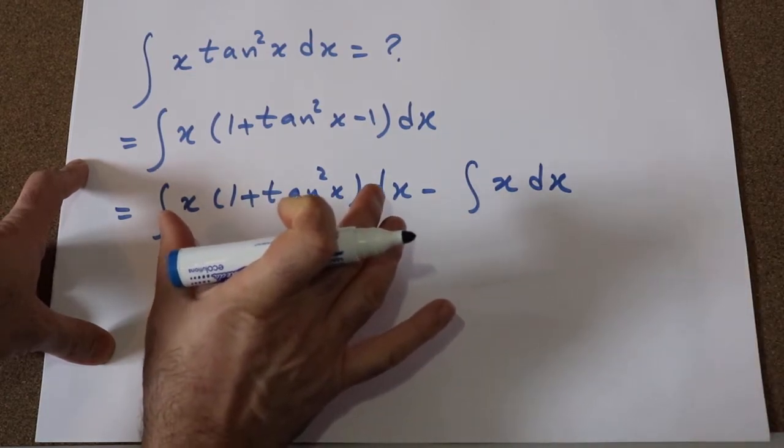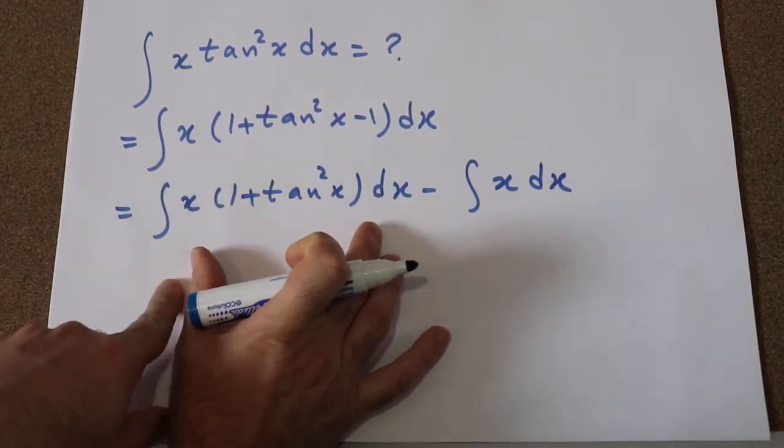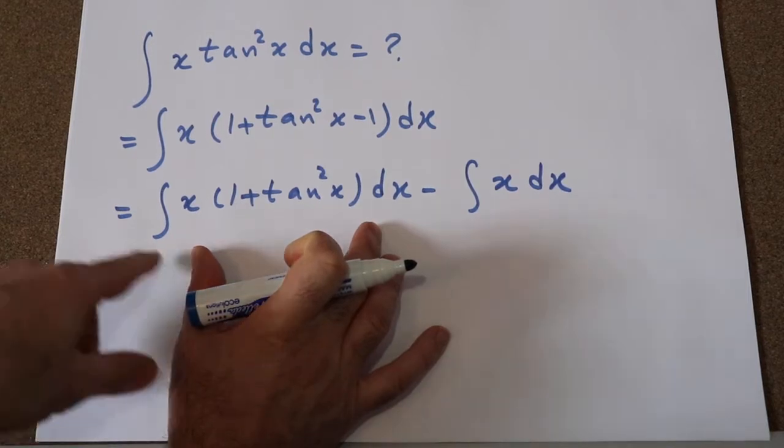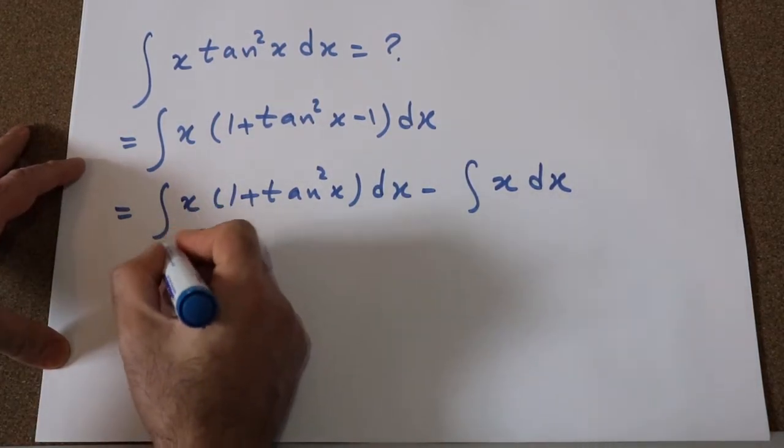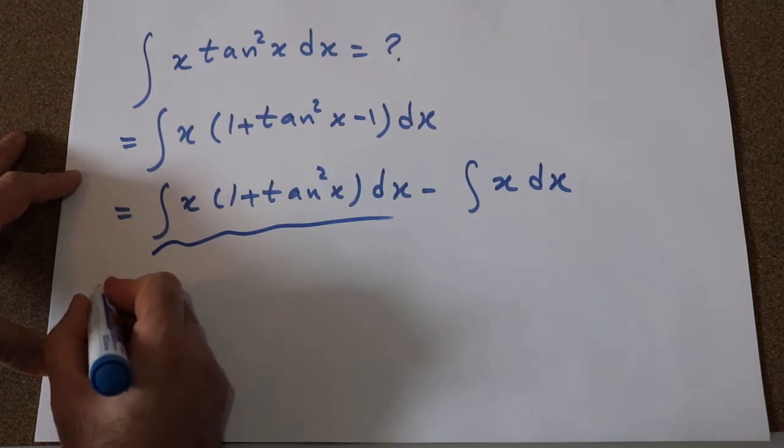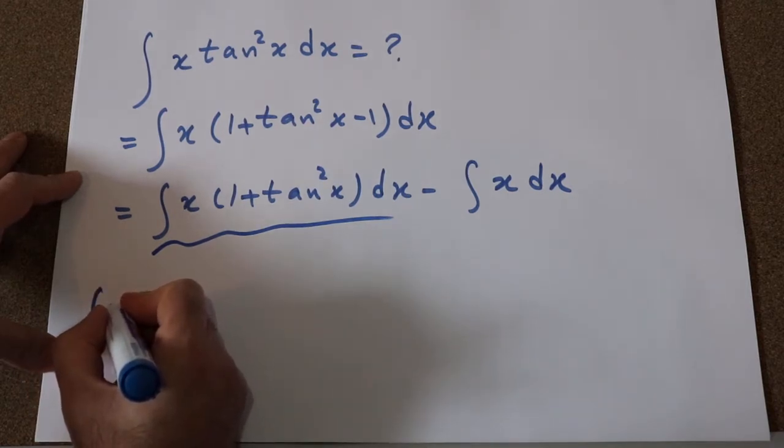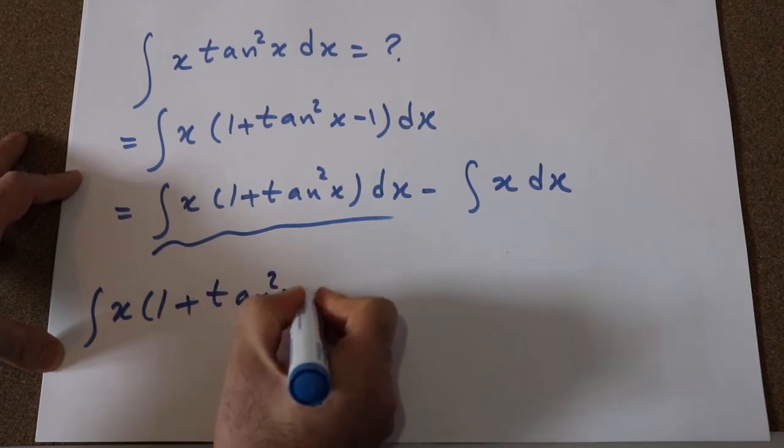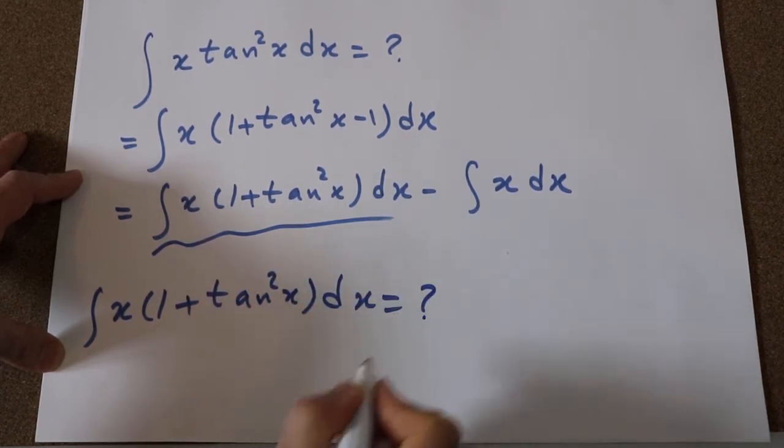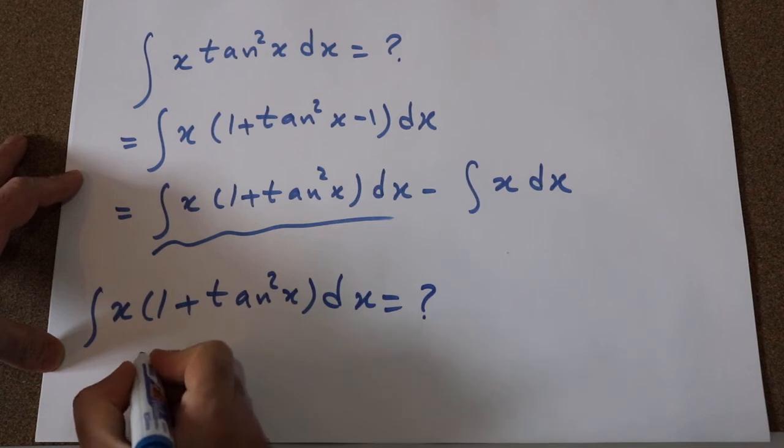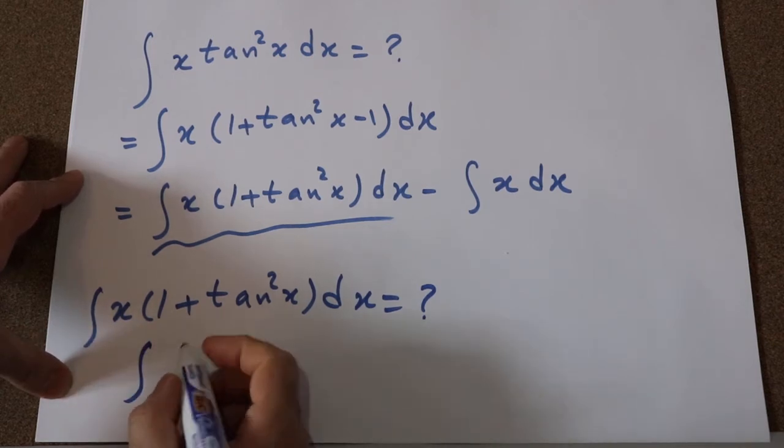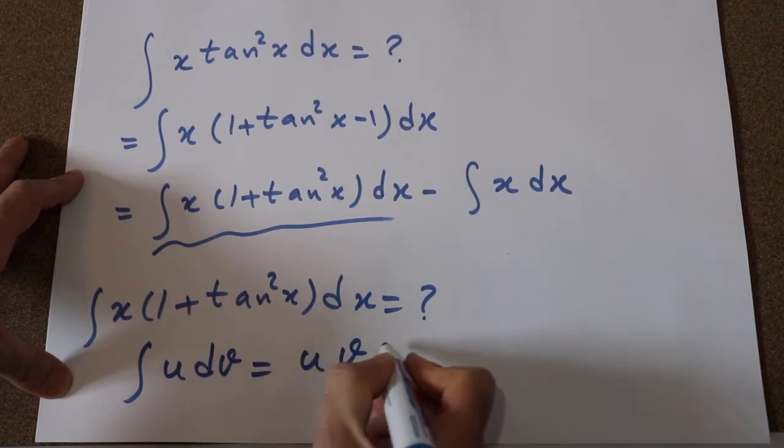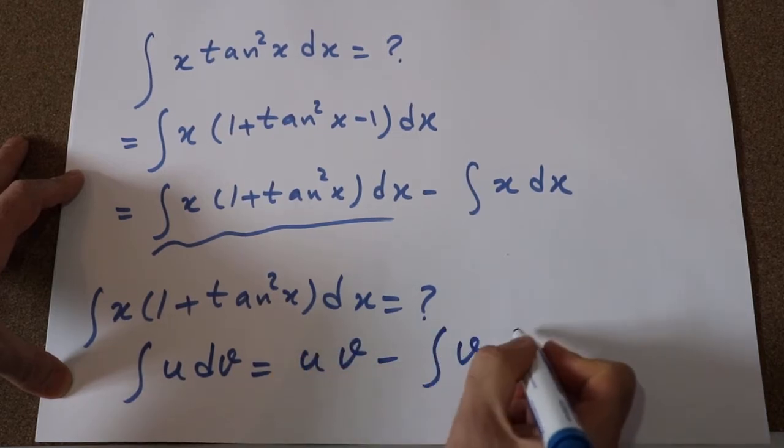And to calculate the first part of this integral, we need to use the formula for integration by parts. So let's first calculate this part of this integral. So integral of x(1 plus tangent square x) dx, that's basically now our question. So we can solve this integral using the formula for integration by parts, that is integral of u dv is equal to uv minus integral of v du.